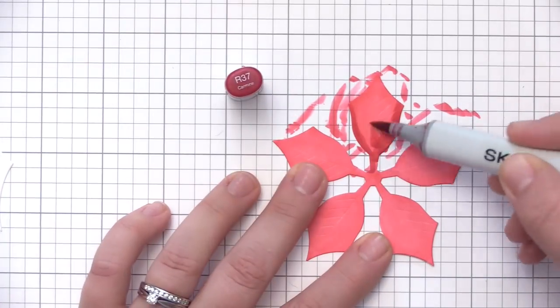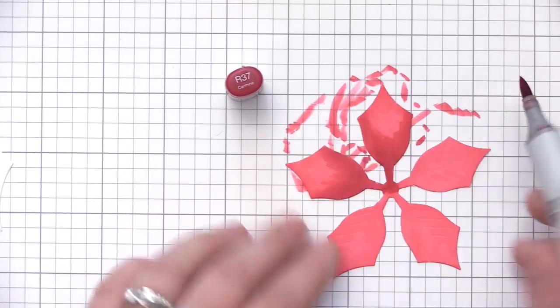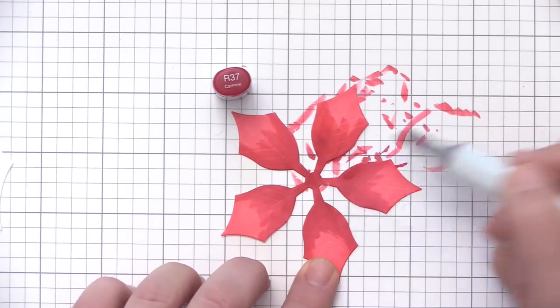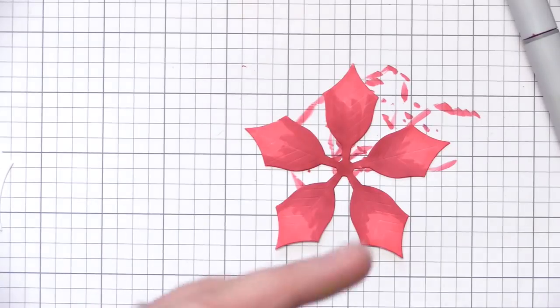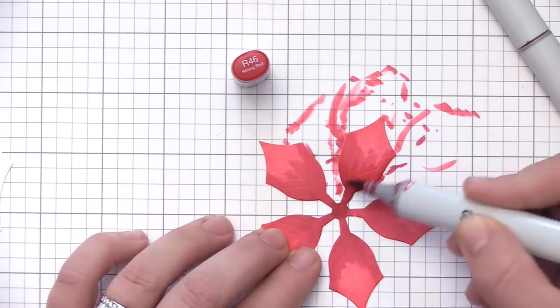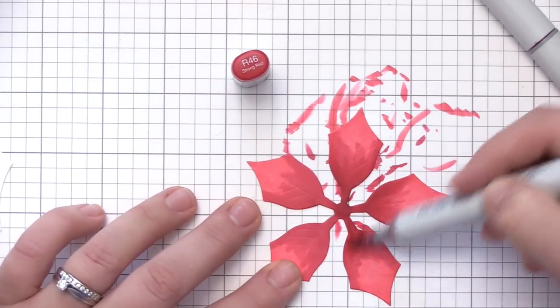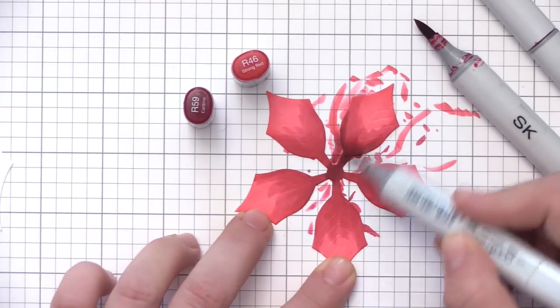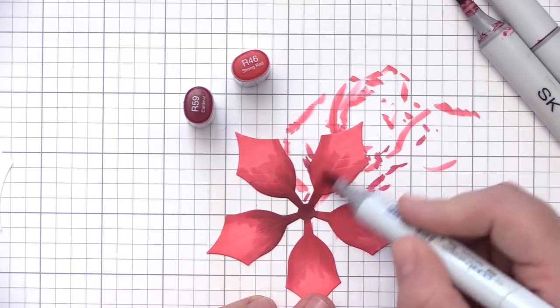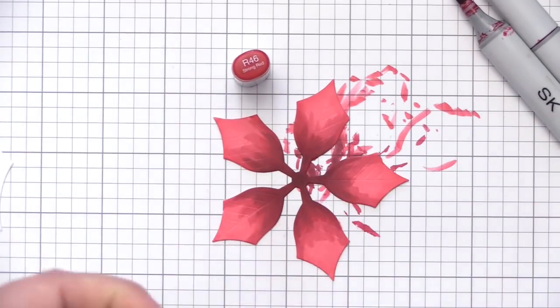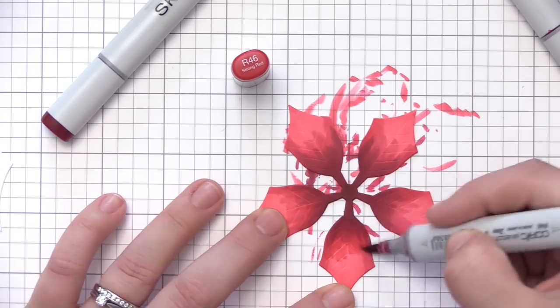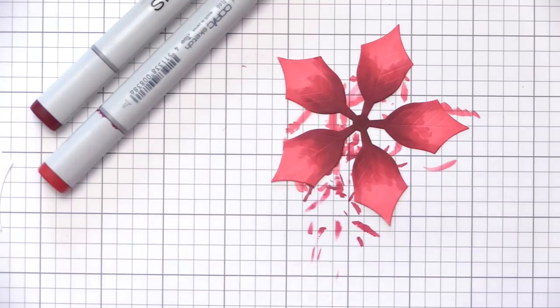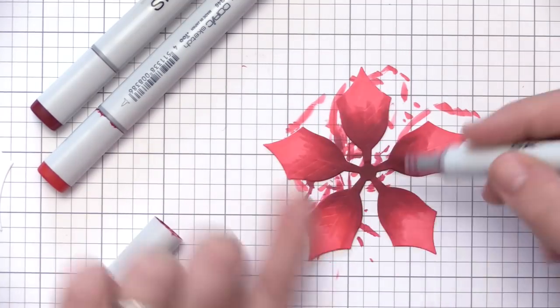So for the poinsettia petals I used R35 as my base layer and I colored that over the entire piece to really saturate the paper. I then went in with R37 which is a little bit darker and I pulled that from the center out towards the middle area of the petals. I followed that up with R46 which is a really dark red and then I went in with R59 which is a really super deep red color. You can see how much contrast that one added when we colored that on.